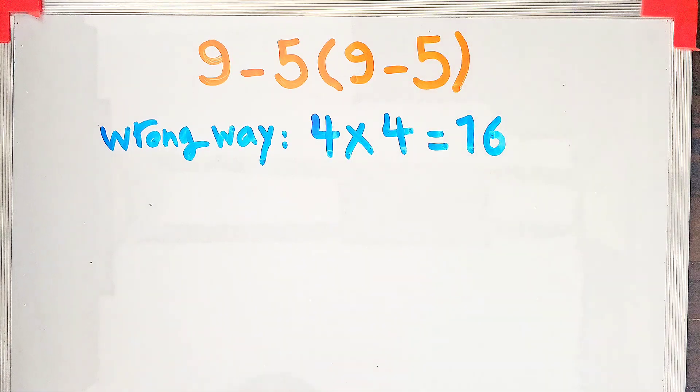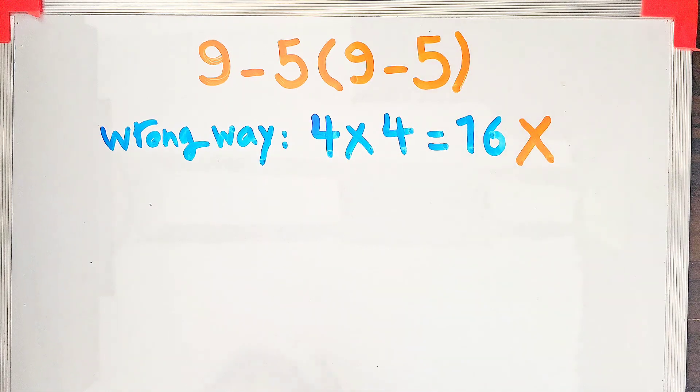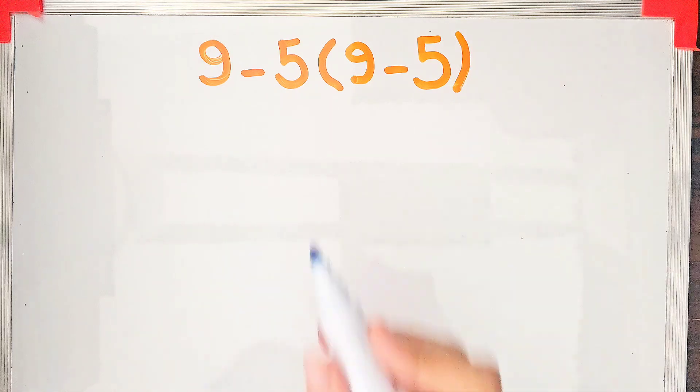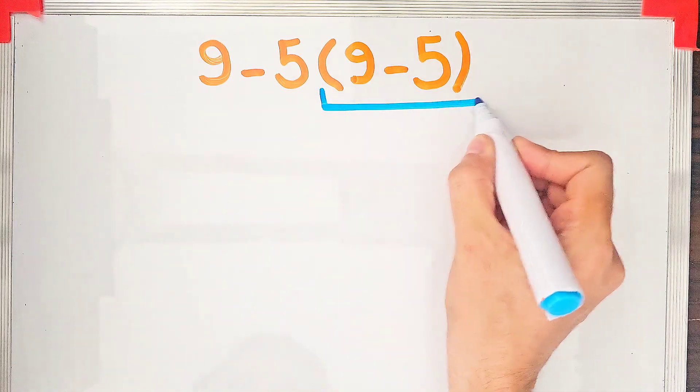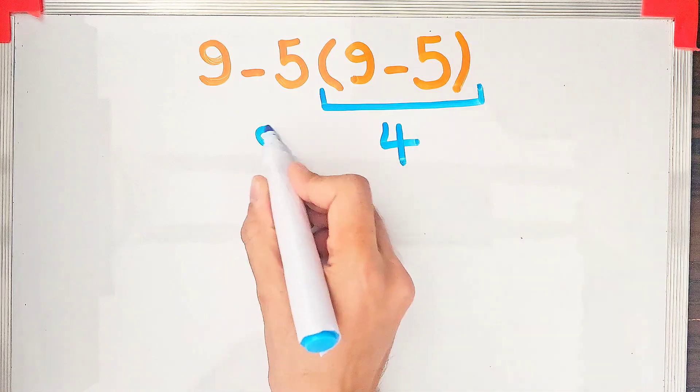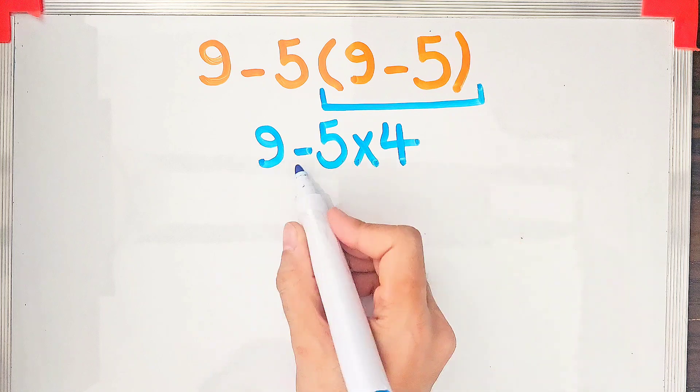But that's definitely wrong. To solve this question, we need to follow the order of operations. First, we simplify the parenthesis: nine minus five equals four. Now we have a new expression: nine minus five times four. The multiplication has the higher priority over subtraction.